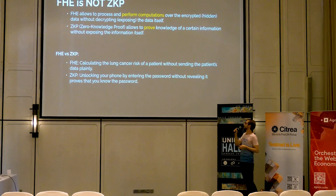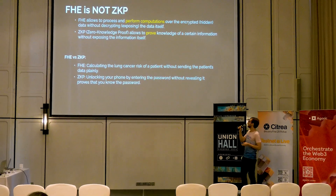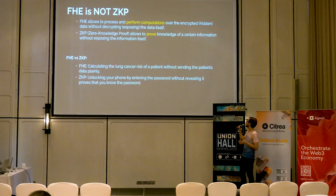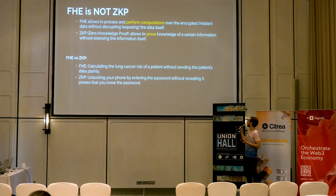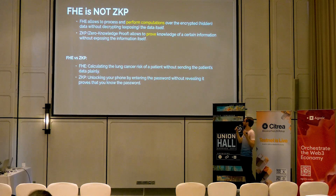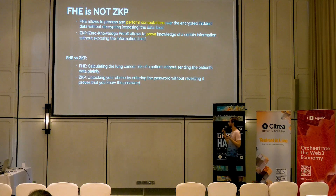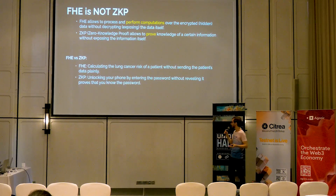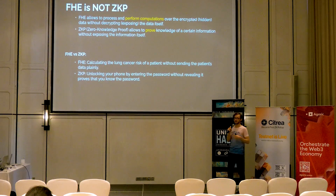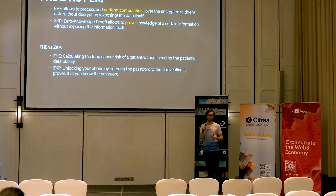One thing I should mention is that FHE is not ZKP — zero knowledge proofs — because FHE allows you to process and perform computations over encrypted data without decrypting. Zero knowledge proofs, on the other hand, allow you to prove knowledge of certain information without exposing the information itself. For example, FHE allows calculating the lung cancer risk of a patient without sending the patient's data in plaintext. But zero knowledge proofs — for example, unlocking your phone by entering a password without revealing it — proves that you know the password. So FHE allows performing operations on encrypted data, while zero knowledge proofs allow you to prove that you know it.